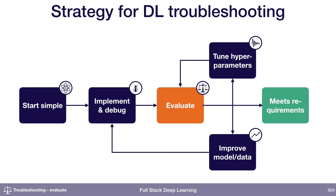The next step is to evaluate the performance of your model and use that evaluation to prioritize what you're going to do to improve it. The way I recommend evaluating your model is by applying a concept from the first machine learning class that you took, which is the bias-variance decomposition.